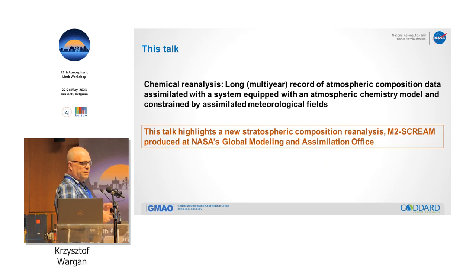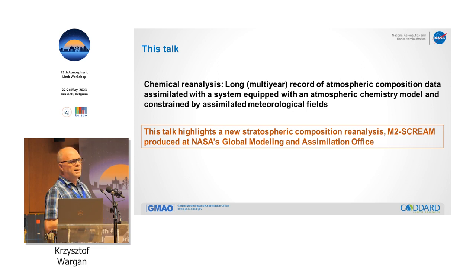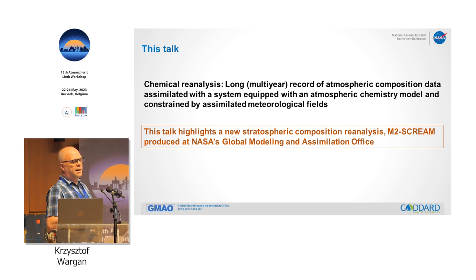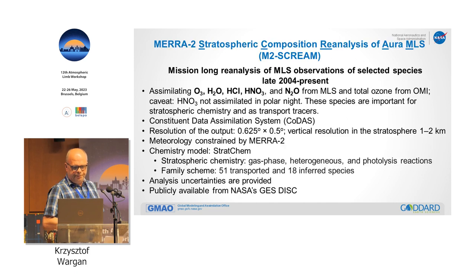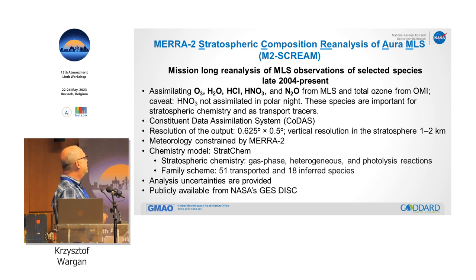This talk is about SCREAM. A chemical reanalysis is a long multi-year record of atmospheric composition data assimilated with a system equipped with an atmospheric chemistry model and constrained by assimilated meteorological fields — in our case, MERRA-2. We are assimilating five species from MLS: ozone, water vapor, HCl, HNO3, and N2O. This list can be expanded, but this is what we have in this reanalysis.